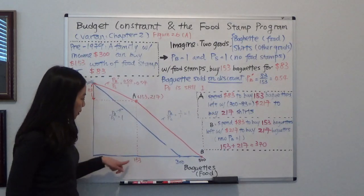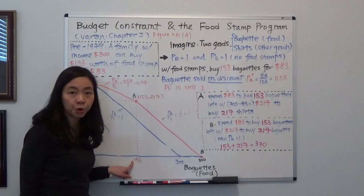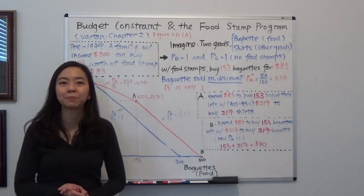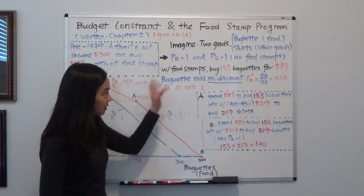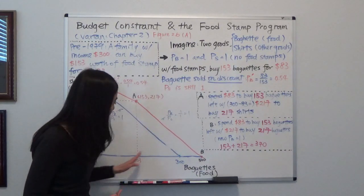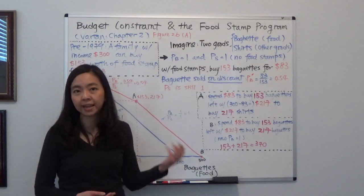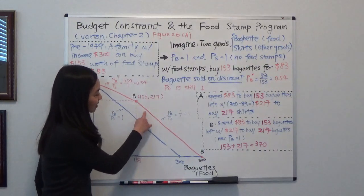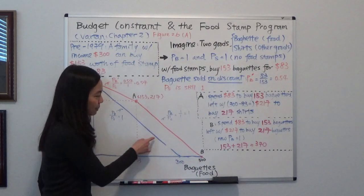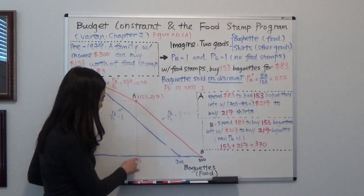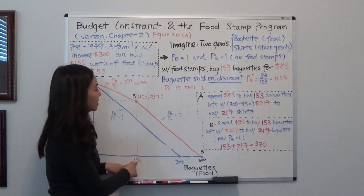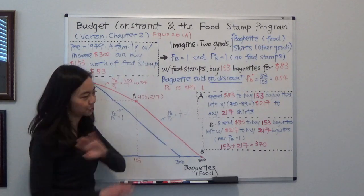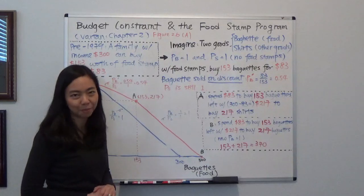And after you purchase the 153 baguettes, if you want to buy more baguettes, you can't buy baguettes on discount anymore because that's a discount program. If you want to buy more, you'll have to buy a baguette at $1 just as everyone else. So you can see afterwards, the slope of budget line is just the same as before because after the 153 baguettes, the price of baguette has increased from 54 cents to $1 because you have depleted your food stamps.